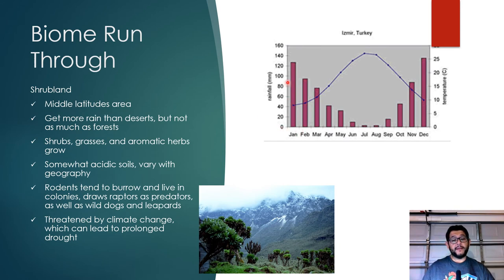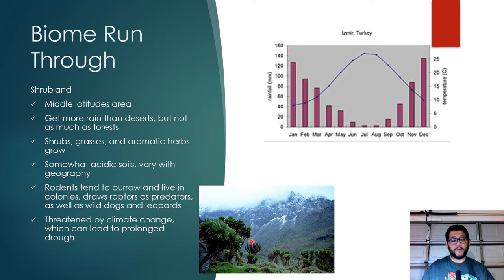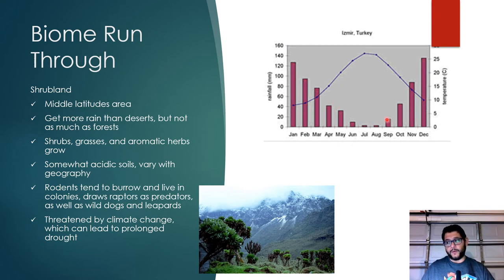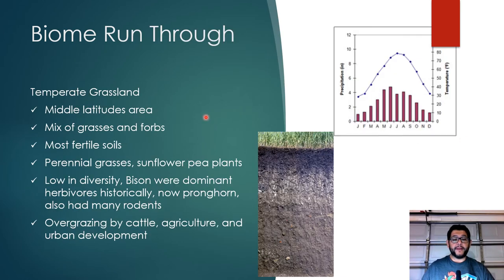Shrublands typically have dry, high-temperature summers. They get more rain than deserts but less than forests. They feature shrubs, grasses, aromatic herbs like rosemary and thyme, and some small trees. They're often associated with mountainous regions. Rodent populations living in colonies attract raptors and birds of prey, and in some parts of the world wild dogs and leopards. Their main threat is climate change leading to increased drought as a long-term issue.